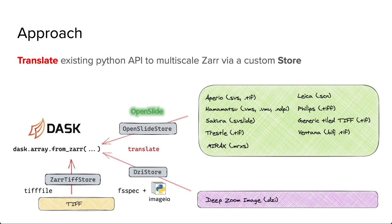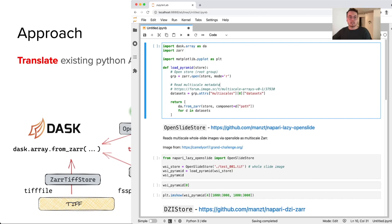To demonstrate this concept of interoperability, I've written a function here that takes a generic Zarr store, which is just a mutable mapping, and will read the multi-scale metadata. From that metadata, it will open each level in that store as a separate Zarr array, and so this returns a list of Dask arrays.